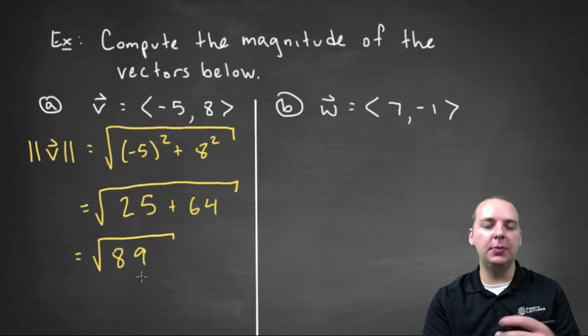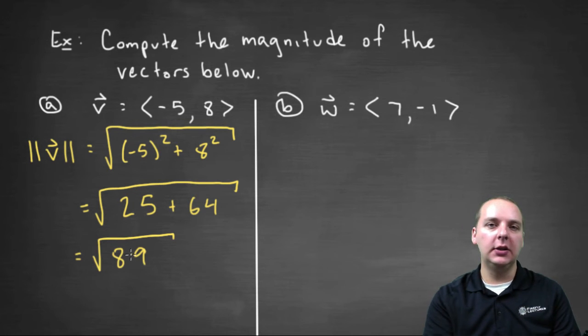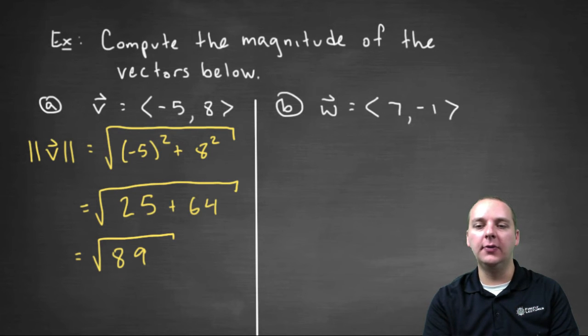And we should try to simplify that if possible, but I don't think this one simplifies, so we'll just leave it like that. This is the length or the magnitude of vector v.